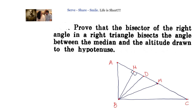Hello friends, welcome back. Let's look at this problem: prove that the bisector of the right angle in a right triangle bisects the angle between the median and the altitude drawn to the hypotenuse. So we have to prove that BD divides the angle MBH into two equal parts.